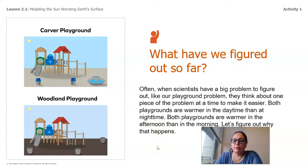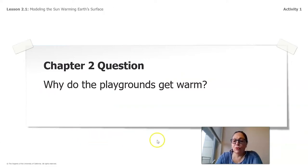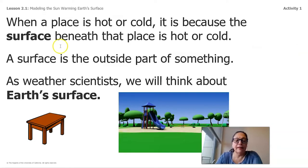So we have already figured out a couple of things so far. Often when scientists have a big problem to figure out like our playground problem, they think about one piece of the problem at a time to make it easier. Both playgrounds are warmer in the daytime than at nighttime. Both playgrounds are warmer in the afternoon than in the morning. So we need to figure out why that happens. So a question for chapter two is going to be why do the playgrounds get warm?